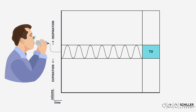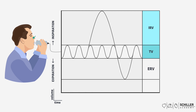Now imagine that you are breathing in as deeply as possible. This is the inspiratory reserve volume, also known as IRV. Now imagine taking a normal breath and then performing a maximal expiration. This is the expiratory reserve volume, or ERV. The air remaining in the lungs after the maximal expiration is the residual volume, or RV.